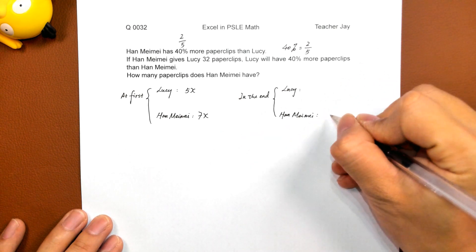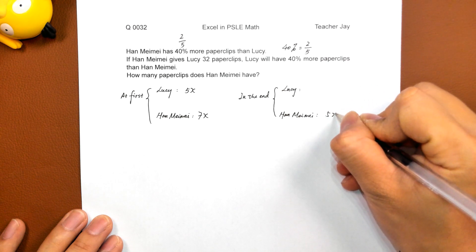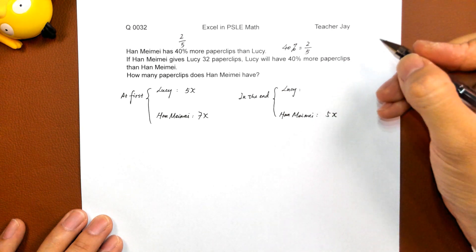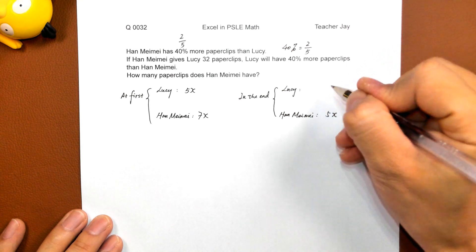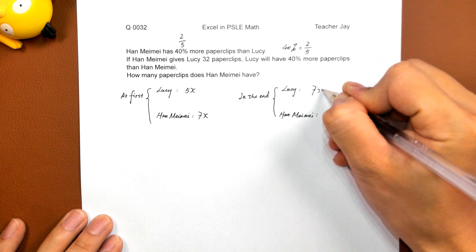So, Han Mei Mei, the number of paper clips Han Mei Mei has become 5x and Lucy 7x.